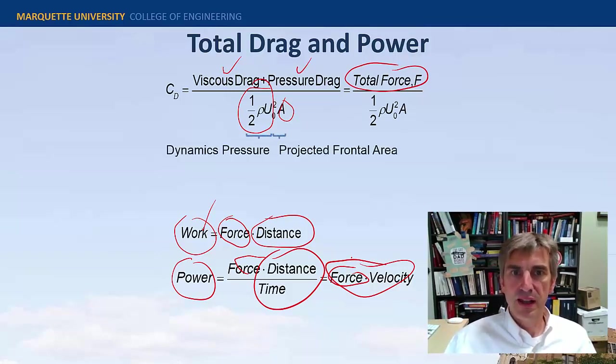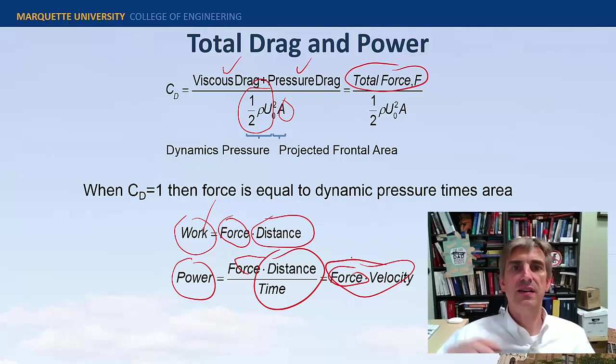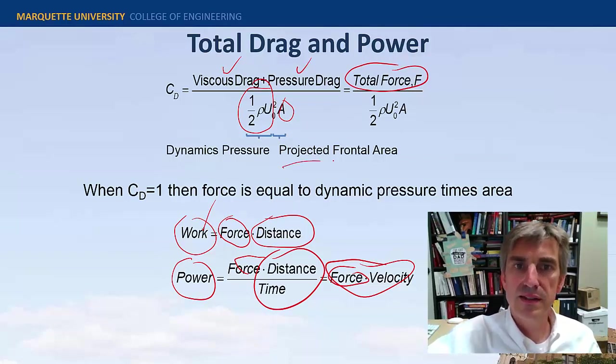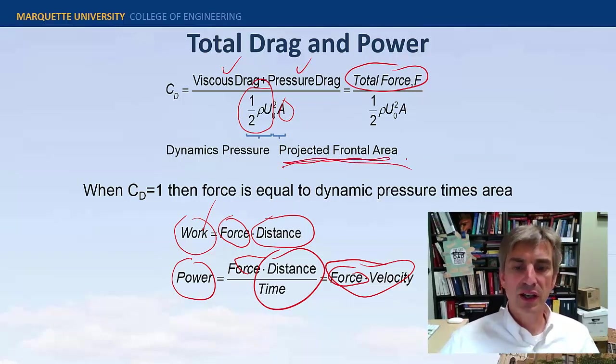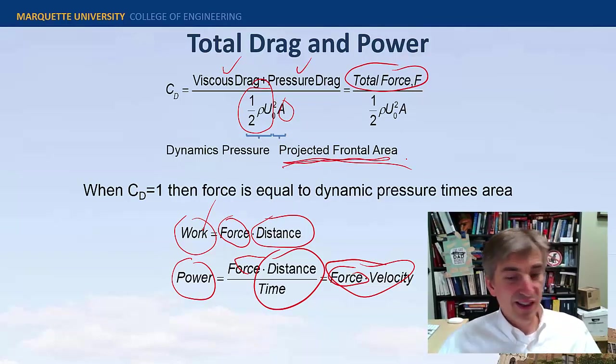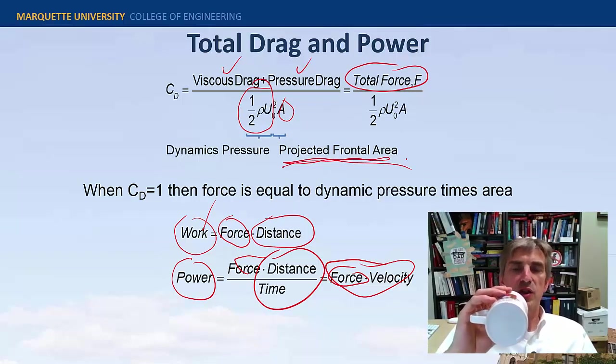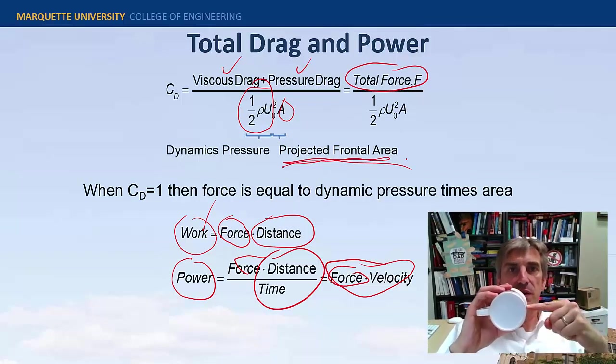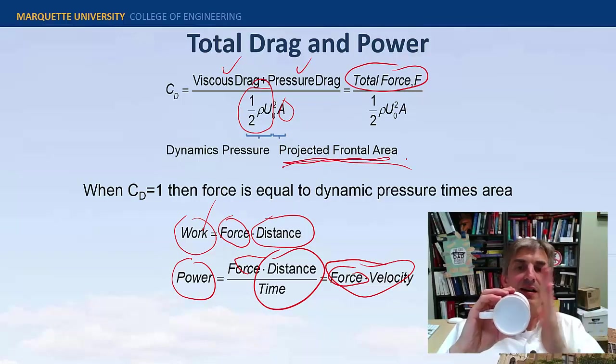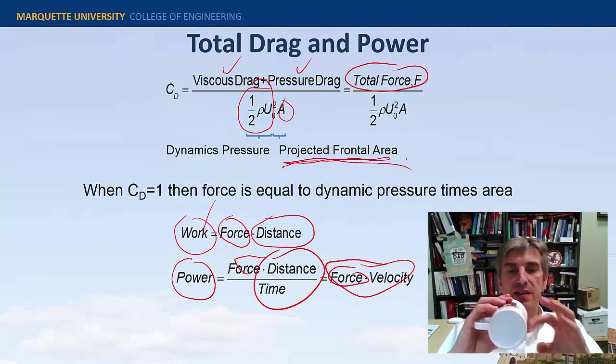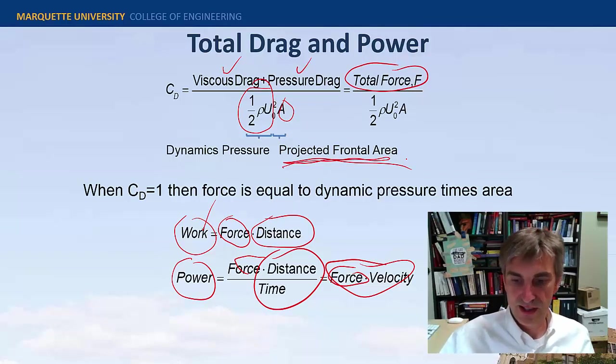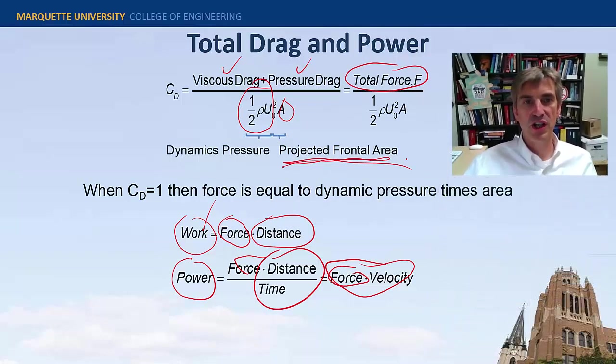This is the dynamic pressure and that's the frontal projected area. That's a good point there. That the area that we're talking about would be the area that this object would make a shadow cast on the wall. So this is a circular cylinder and the flow is going this way. The area is the diameter, the height, times the length, not the surface area or anything else. So it's that frontal projected area.